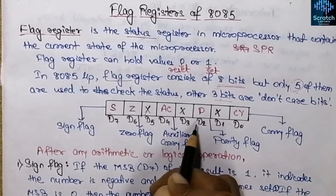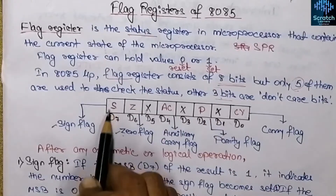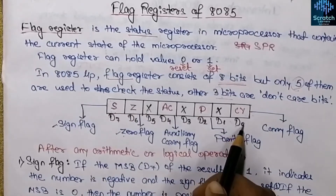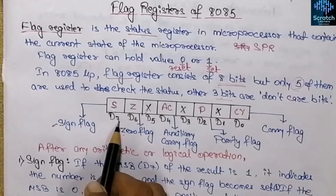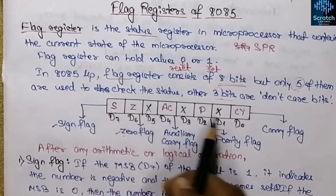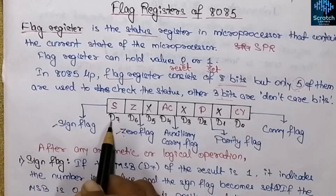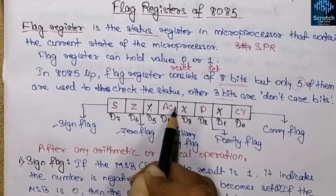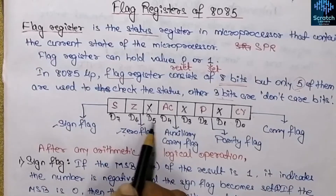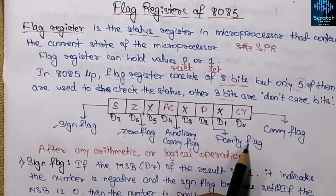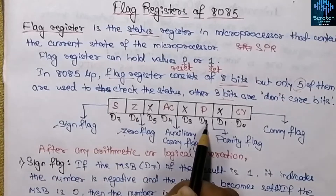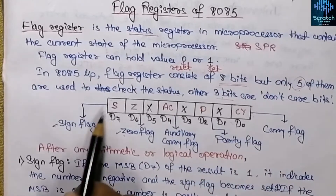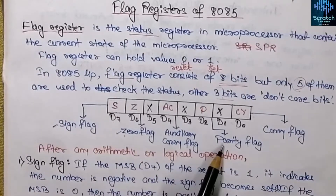As the flag register is 8 bits, we assign it from the lowest bit D0 to the most significant bit D7. The 5 significant bits are: the sign flag at the most significant bit D7, then the zero flag, then the auxiliary carry flag at bit D4, then parity flag at bit D2, and at the least significant bit we have the carry flag.